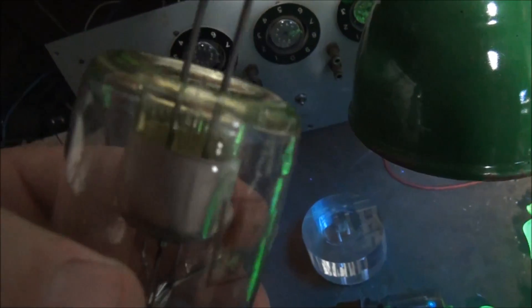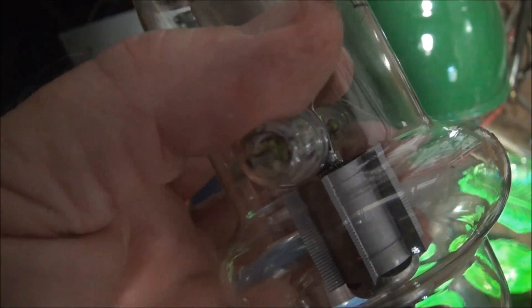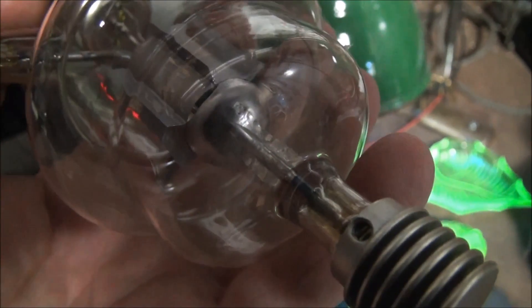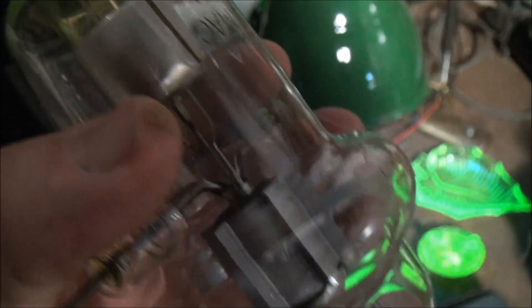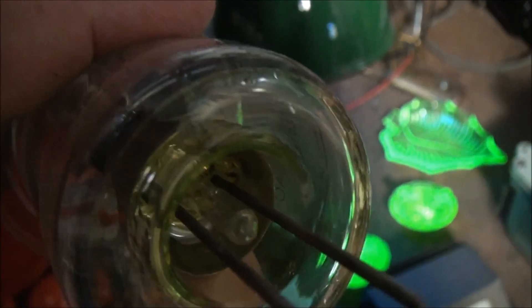And also some radio valves used uranium glass to seal the electrodes. That's just due to the uranium glass having the same thermal expansion characteristics as the metal. Maintains the glass seal without cracking as the tube heats up.